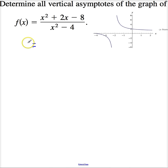Okay, x squared plus 2x minus 8 can be factored into x plus 4 times x minus 2. And when I factor the denominator, this is x minus 2, x plus 2.